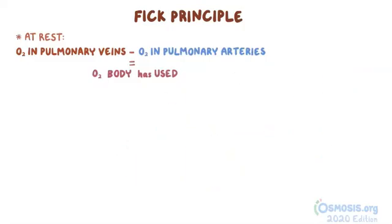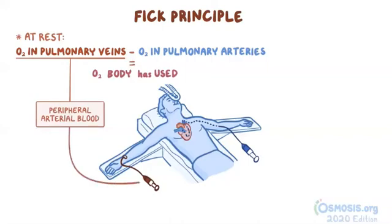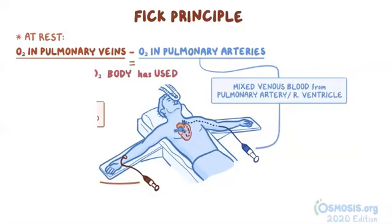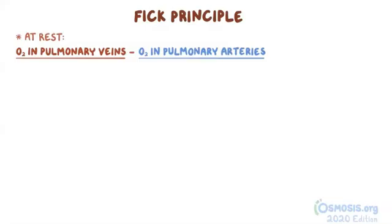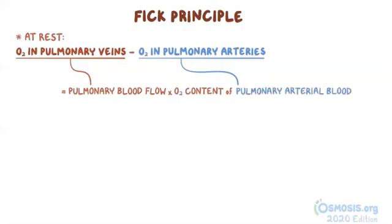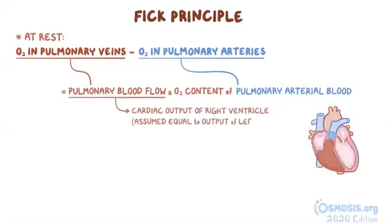Each of the parameters of the Fick Principle can be measured. The oxygen content of the pulmonary venous blood can be measured by taking a sample from peripheral arterial blood, since none of the oxygen added by the lungs has been consumed at this stage. The oxygen content of the pulmonary arterial blood can be measured by taking a sample of mixed venous blood from the pulmonary artery or the right ventricle. Note that pulmonary blood flow is the cardiac output of the right ventricle, and is assumed to be equal to the cardiac output of the left ventricle.